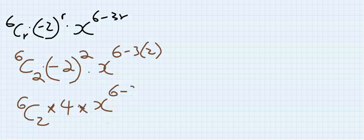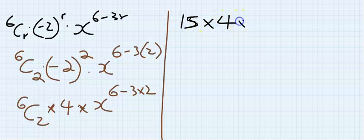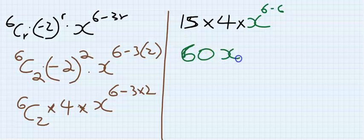x to the power of 6 minus 3 times 2. 6 combination 2 is 15, I will multiply it by 4, and you have x to the power of 6 minus 6. 60 times x to the power...